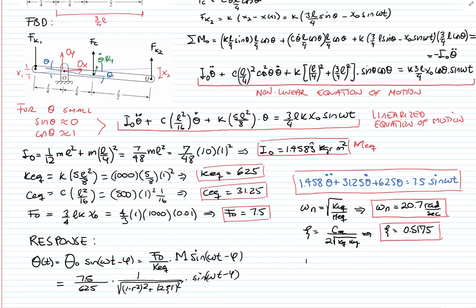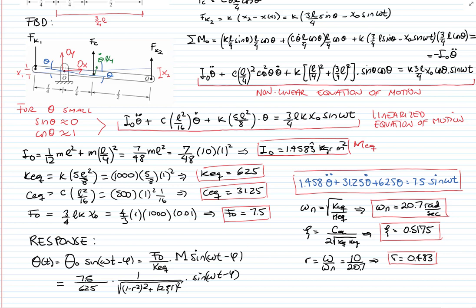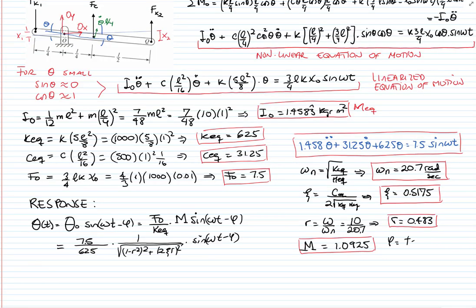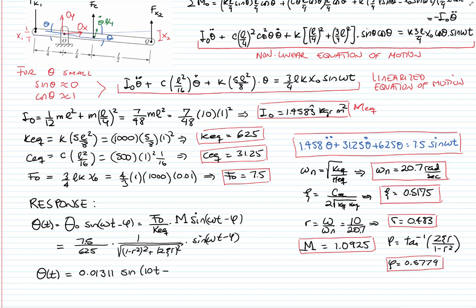The frequency ratio r equals omega divided by omega_n. With omega = 10 rad/s and omega_n = 20.7 rad/s, r = 0.483 — less than 1, so the system has not reached resonance. The magnification factor is 1.0925. The phase angle is the inverse tangent of (2 zeta r) / (1 − r²), giving phi = 0.57 radians. The final response is theta(t) = 0.01311 sine(10t − 0.5779) radians.